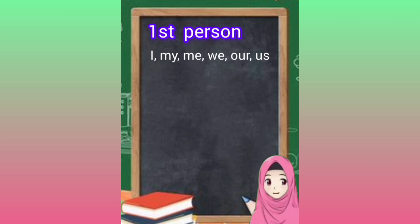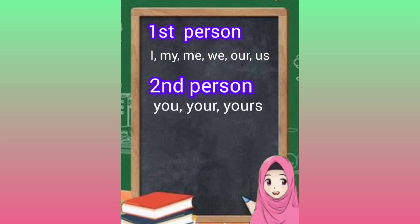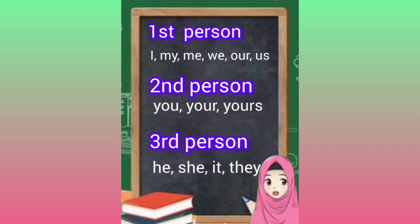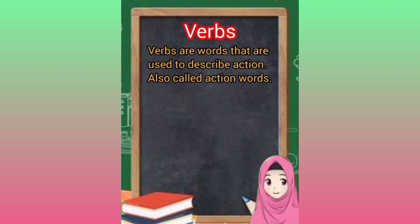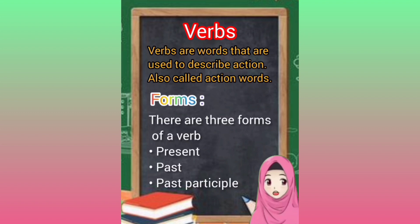First person: I, my, me, we, our, us. Second person: you, your, yours. Third person: he, she, it, they. Verbs are words that are used to describe action — also called action words. There are three forms of a verb: present, past, and past participle.